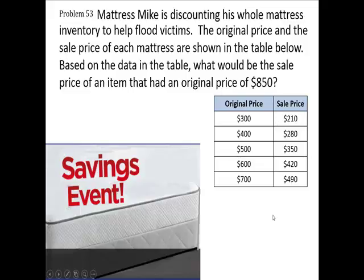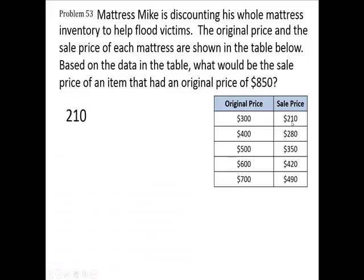So what is the discount? We're going to have four choices here for an $850 price. What are you going to have to pay? First of all, let's look at this $300 and $210. We would like to know: $210 is what percent of the original $300? So we're going to figure out what the rate is — it's not going to change for any of these. Right now we're just going to assume that it's the same for all of them. I'm looking for what percent of $300 is $210.